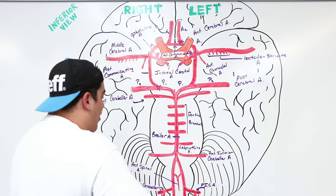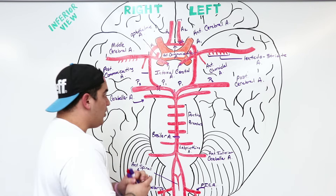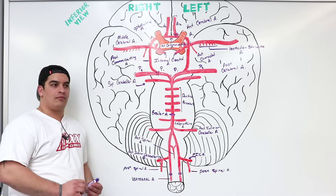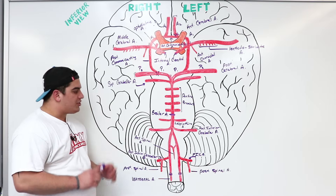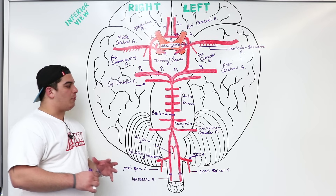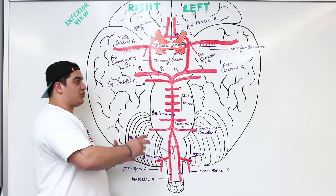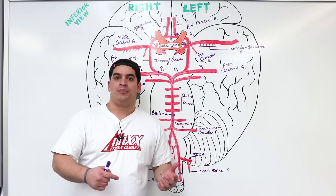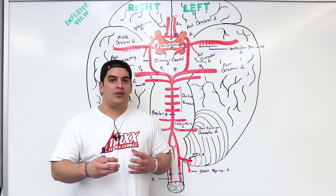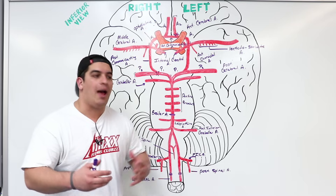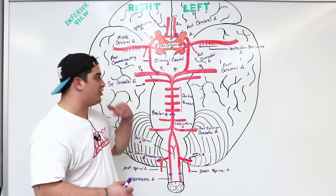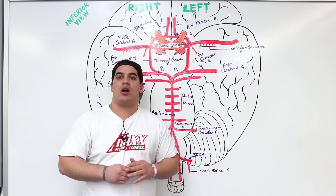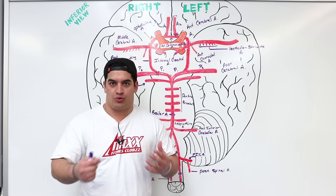That covers all the important vessels of the Circle of Willis. In the next video, we'll discuss clinical implications — what happens with occlusions or aneurysms of these vessels — specifically focusing on cerebral ischemic strokes.